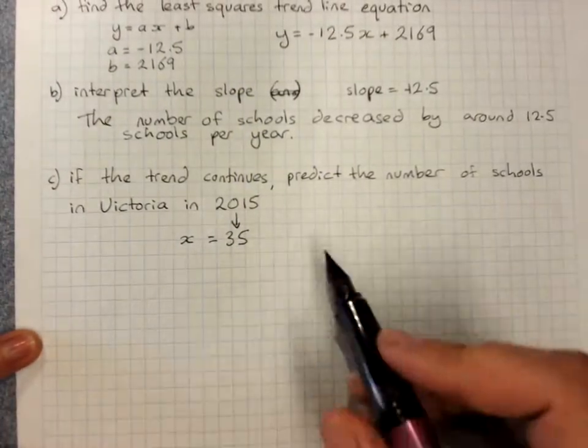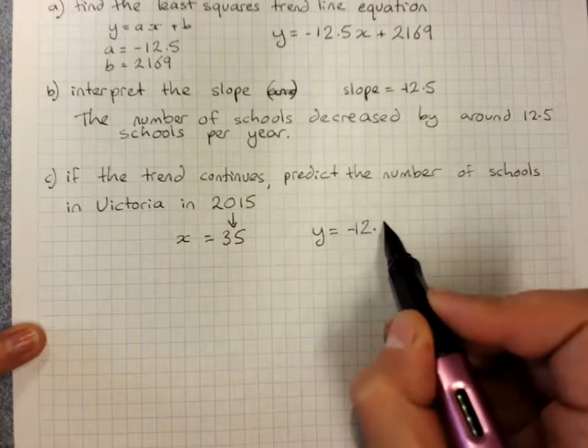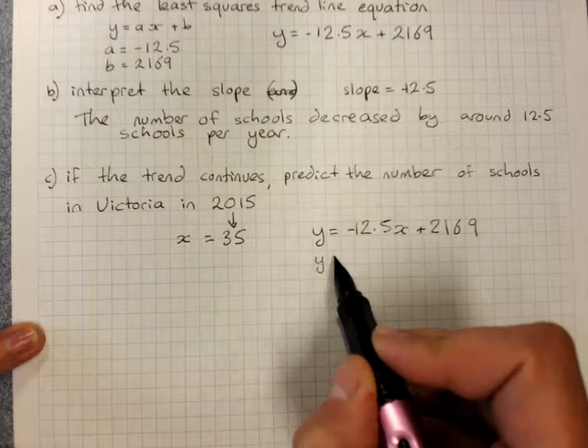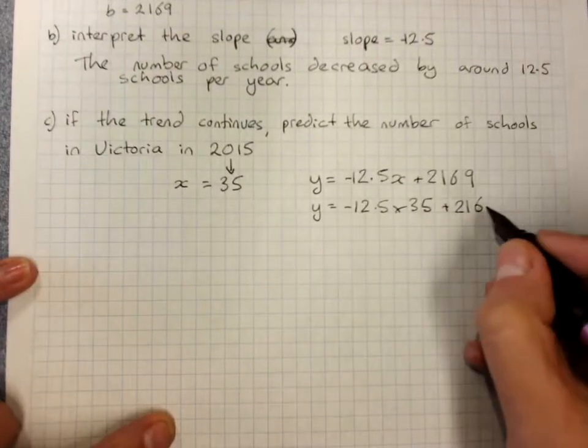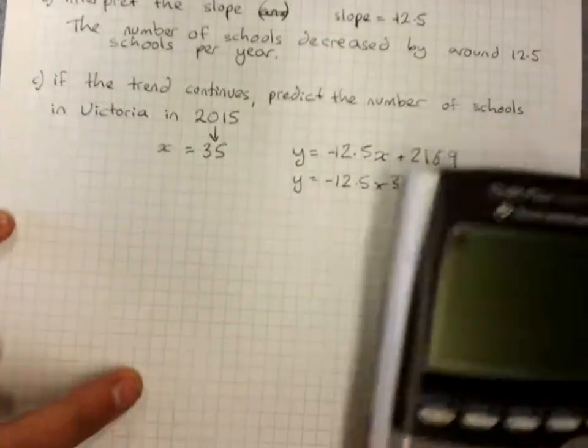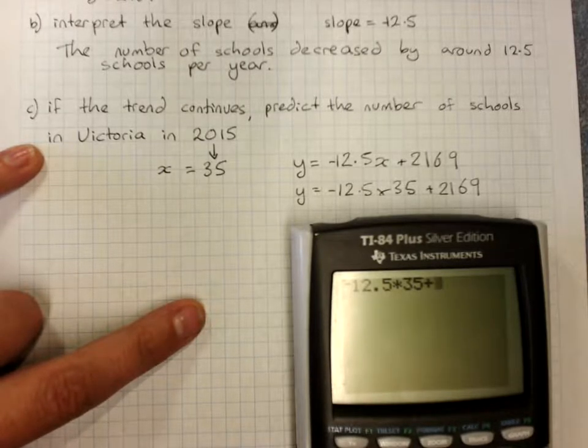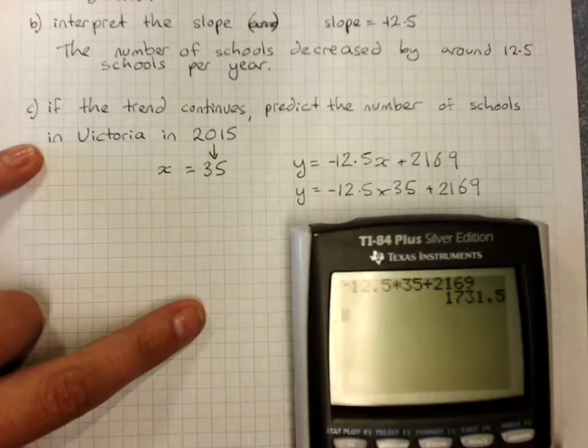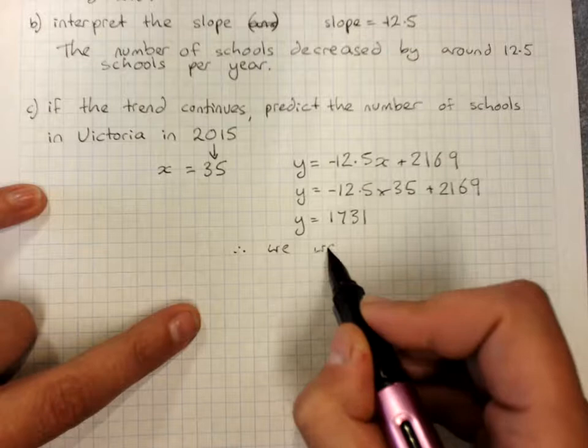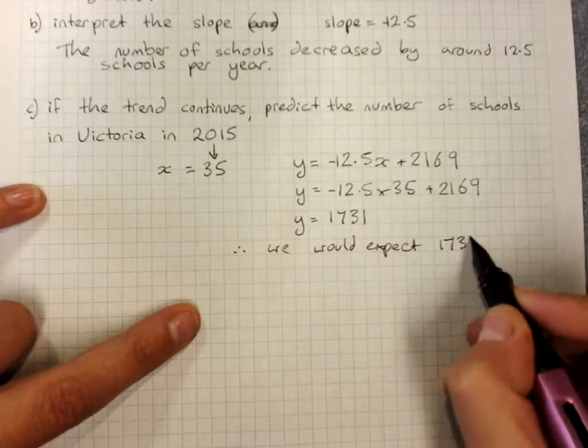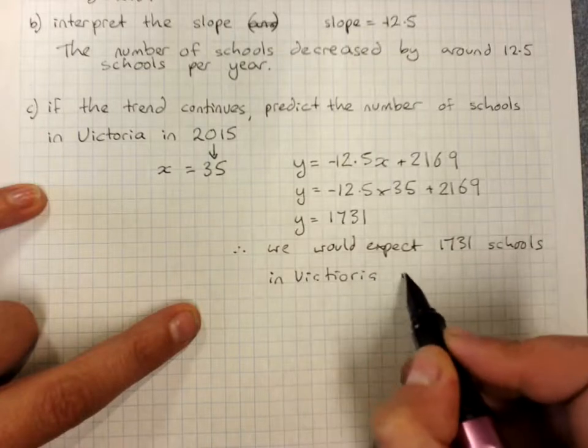So you can use the graphics calculator, if you remember how. Or you can use the line, substitute in the value of x and type this into the calculator and work that out. So that's negative 12.5 times 35 plus 2169. And you would interpret that... We would expect 1731 schools in Victoria in 2015.